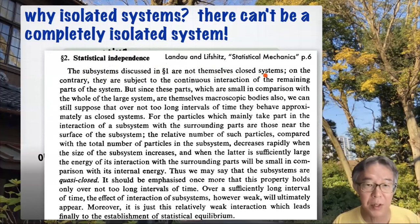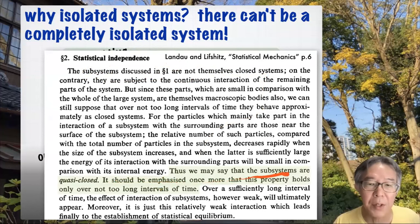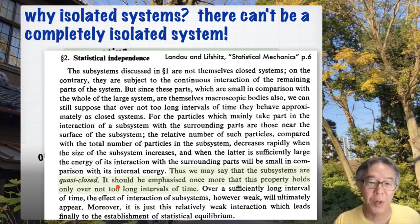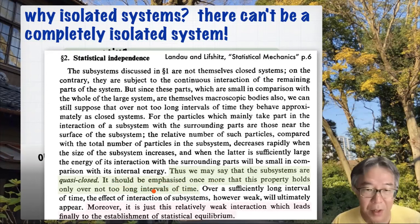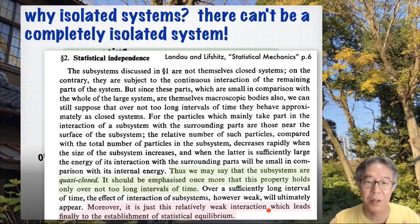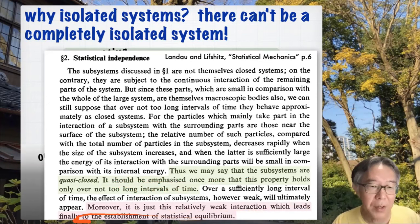This point was emphasized, for example, in the textbook of Landau and Lifshitz. They say that the subsystem or system of interest is not a closed system. Closed system means isolated system. They emphasize that these subsystems are quasi-closed, and they say it can be regarded as a closed, isolated system only for a short time. Moreover — this is a very interesting remark — it is just this relatively weak interaction between the system of interest and environment which leads finally to the establishment of statistical equilibrium.